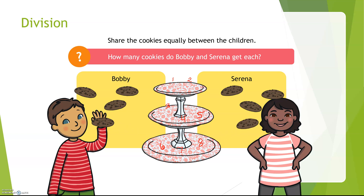There, cookies are equally shared. Let's count how many cookies Bobby has. One, two, three, four. And how about Serena? One, two, three, four. Each got four cookies. So the answer here is four.